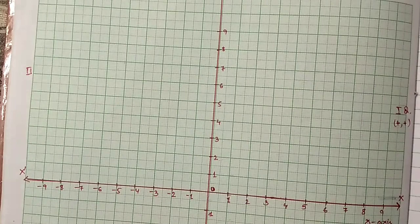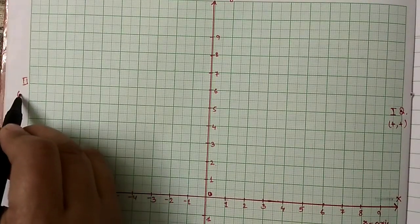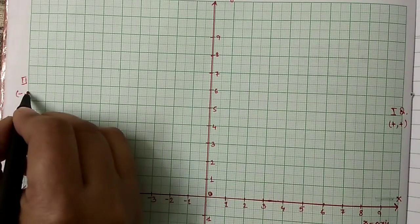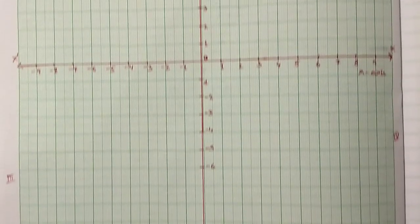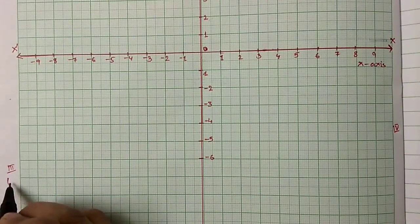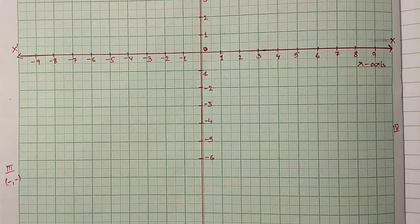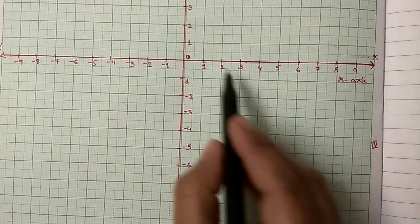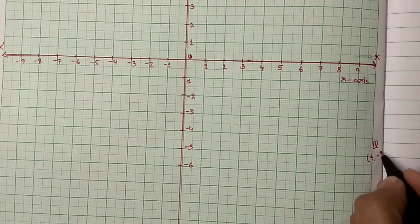In the second quadrant, x is minus and y is plus, so the signs are minus and plus. In the third quadrant, x is minus and y is also minus. And in the fourth quadrant, x is plus and y is minus.